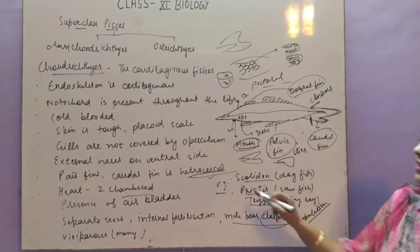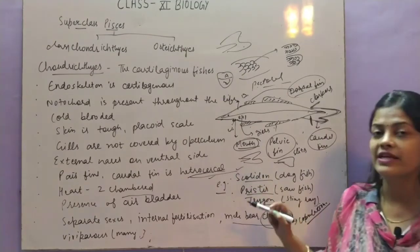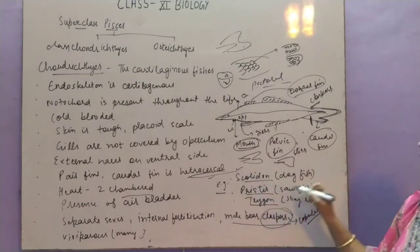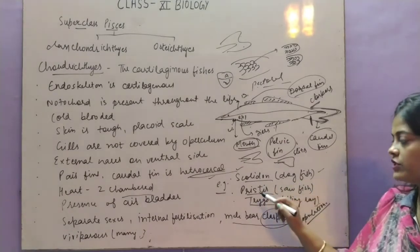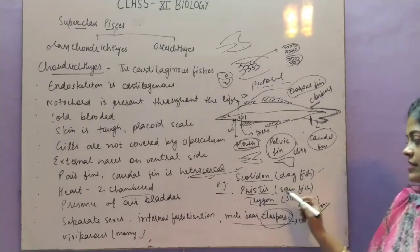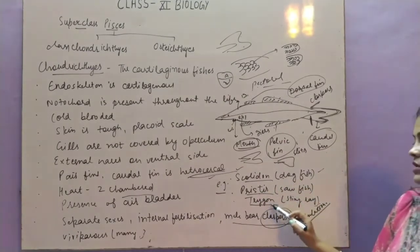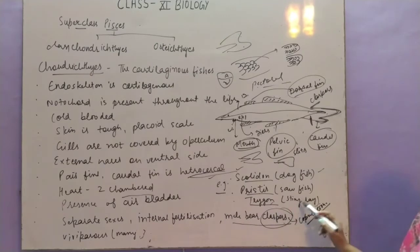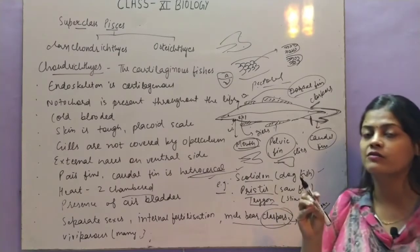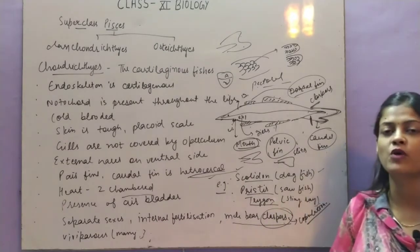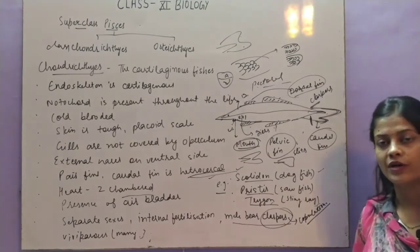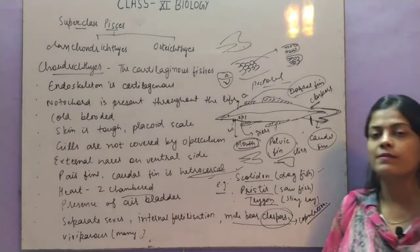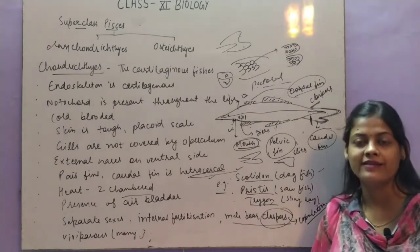Examples of Chondrichthyes given in the NCERT book include Scoliodon, whose common name is dogfish; Pristis, common name sawfish; and Trygon, common name stingray, because it has a sting which can release poison into another organism's body. This is all about Chondrichthyes.